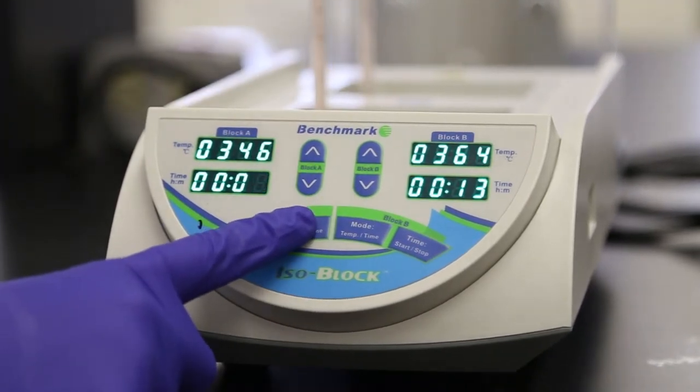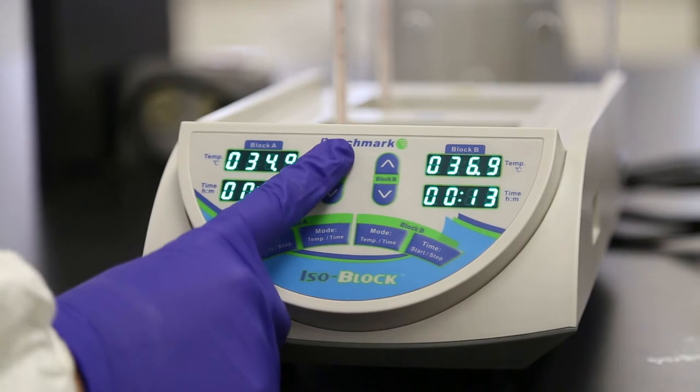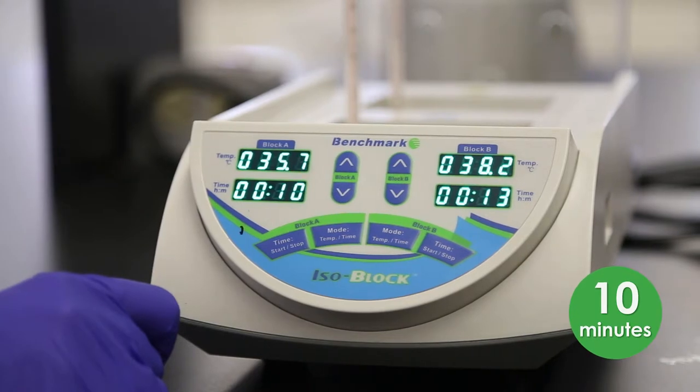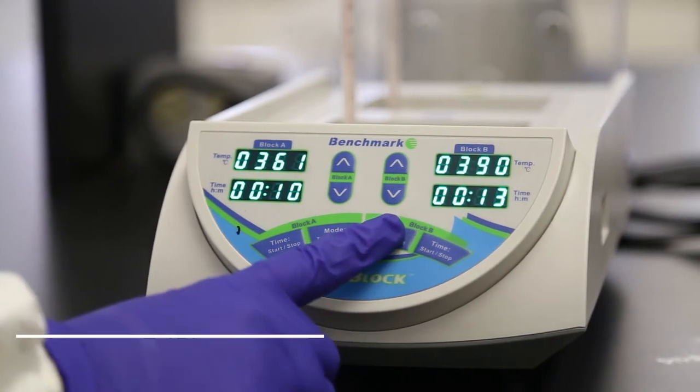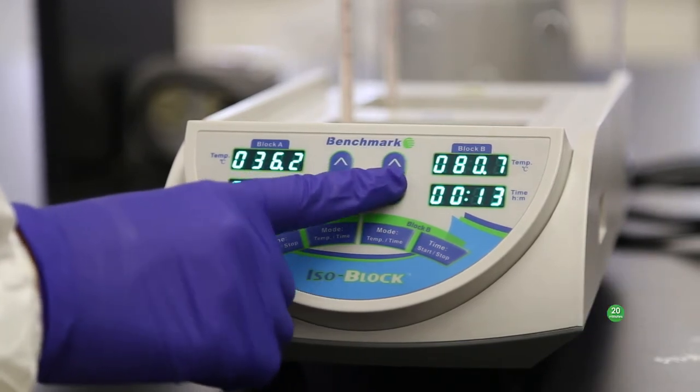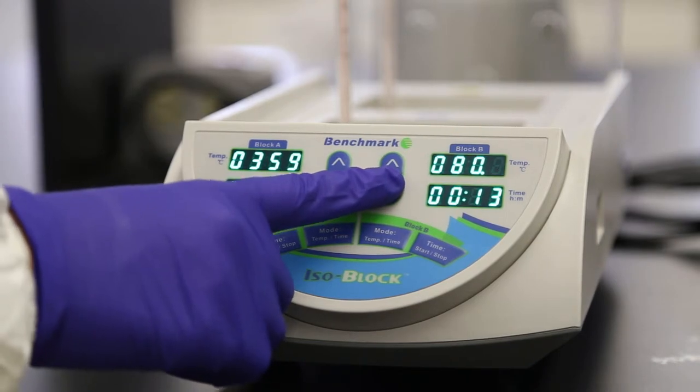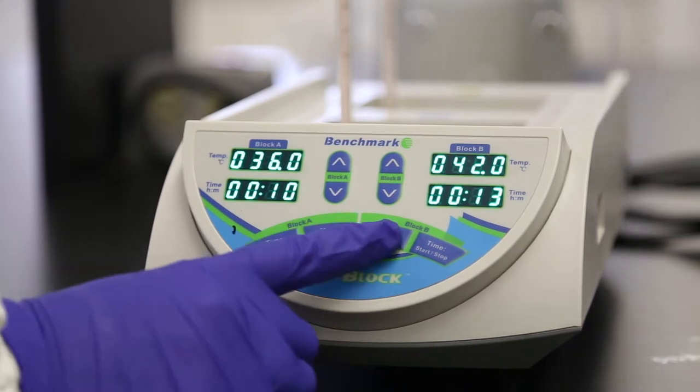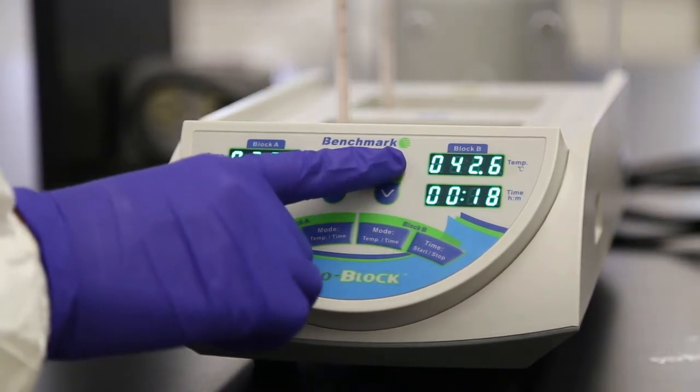To use the built-in timer, press mode temp time for block A twice to select the time setting. Using the block A arrow keys, set the timer to 10 minutes. Don't start the timer yet. Next, set the temperature for block B to 80 degrees Celsius and the timer for 20 minutes using the controls for block B. Again, the block will immediately start heating. Do not start this timer either.